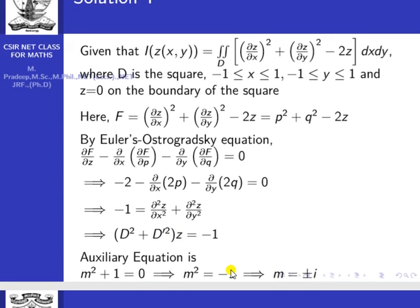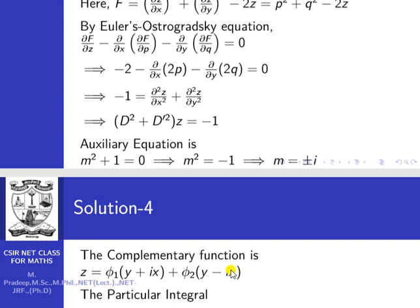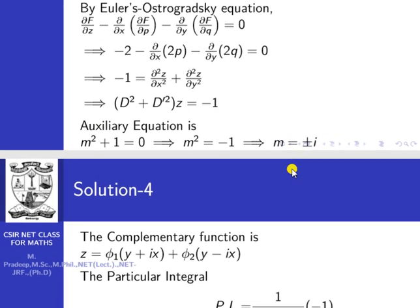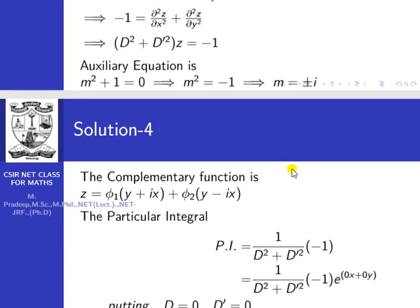What is the auxiliary equation for this PDE? Setting D = m and D' = 1, we get m² + 1 = 0, so m² = −1, giving m = ±i. So m = ±i, which means we have the complementary function.